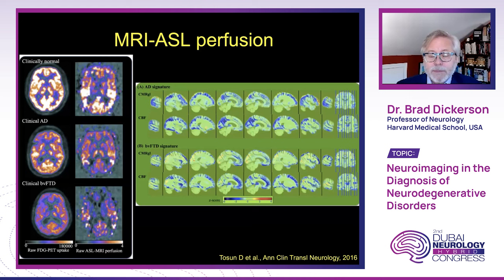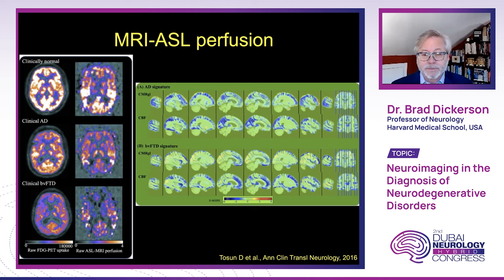The MRI method of arterial spin labeled perfusion has received support as a correlate of glucose PET, so we may see more use of this perfusion technique which can be acquired during a regular MRI session as a cost-effective approach. In most centers, however, this has not yet become available in clinical practice and is still primarily a research tool.